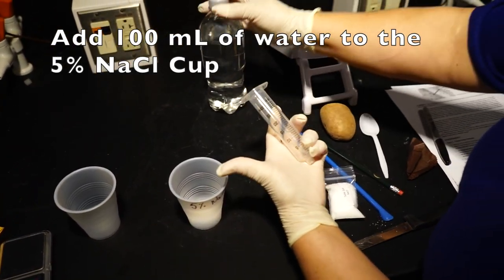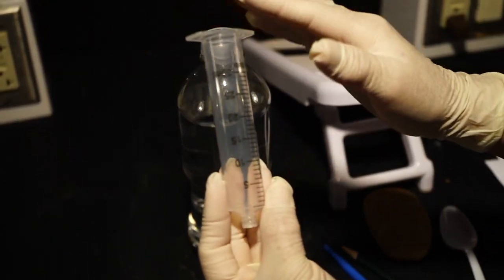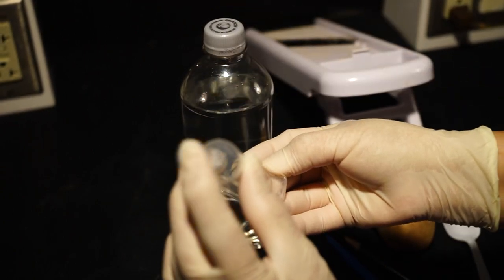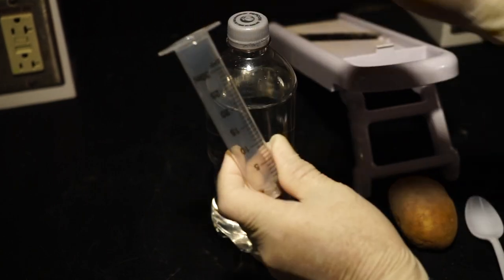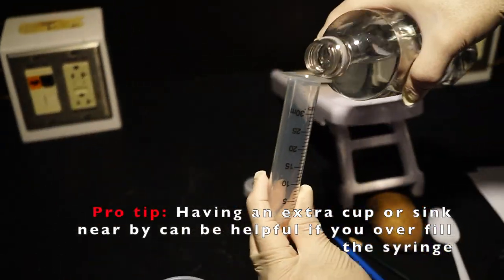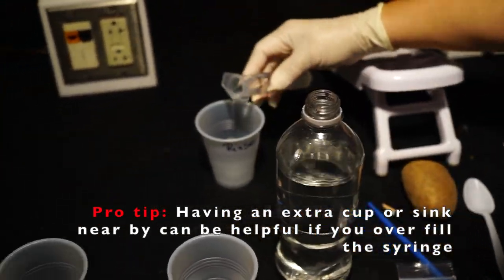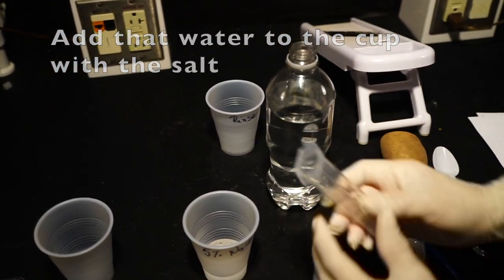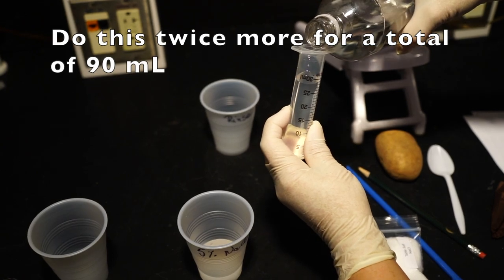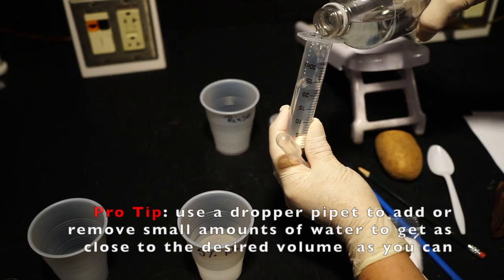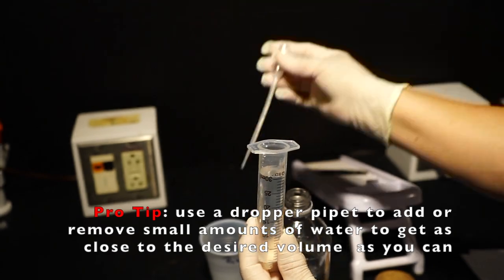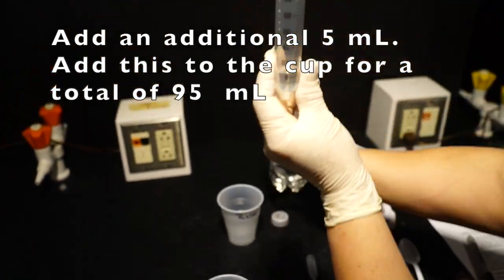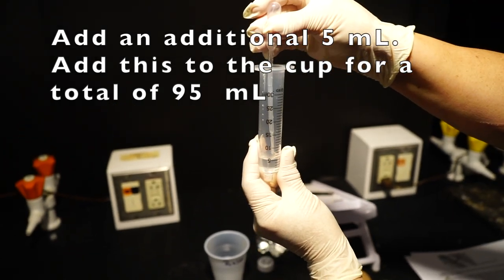Next, you'll need to add 100 milliliters of water to this cup. To do that, you'll use a 30 ml syringe that is closed on one end. Fill the syringe to the top, 30 ml, and add that water to the cup with the salt. Do this two more times for a total of 90 ml. You will then need to measure 5 ml by adding water to the 5 ml mark, then add that to the cup.